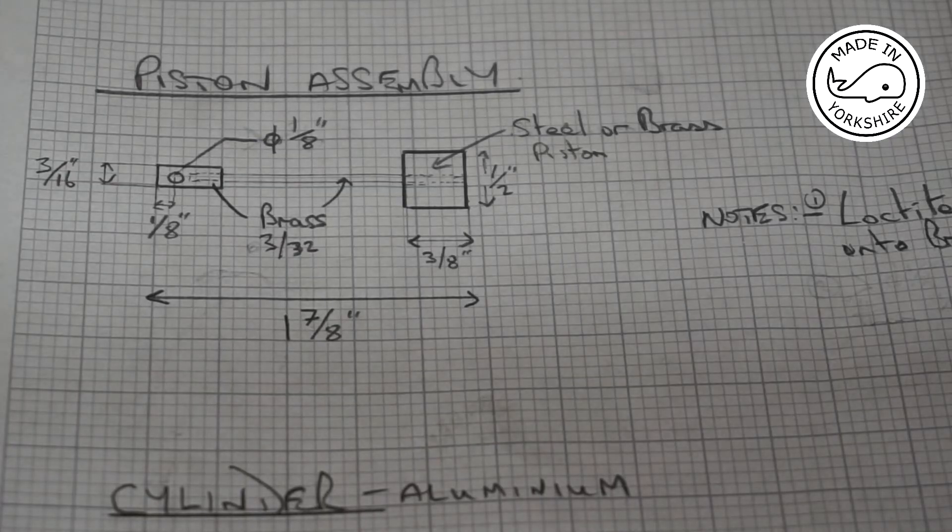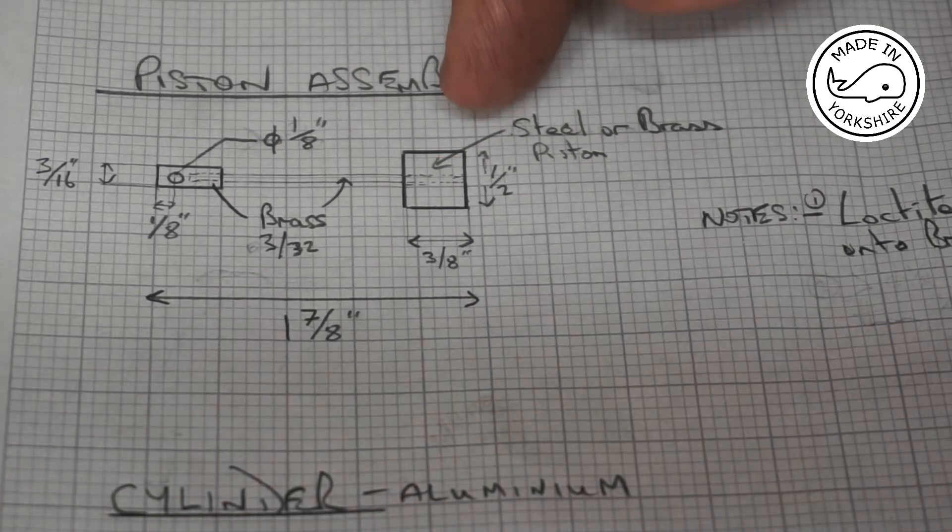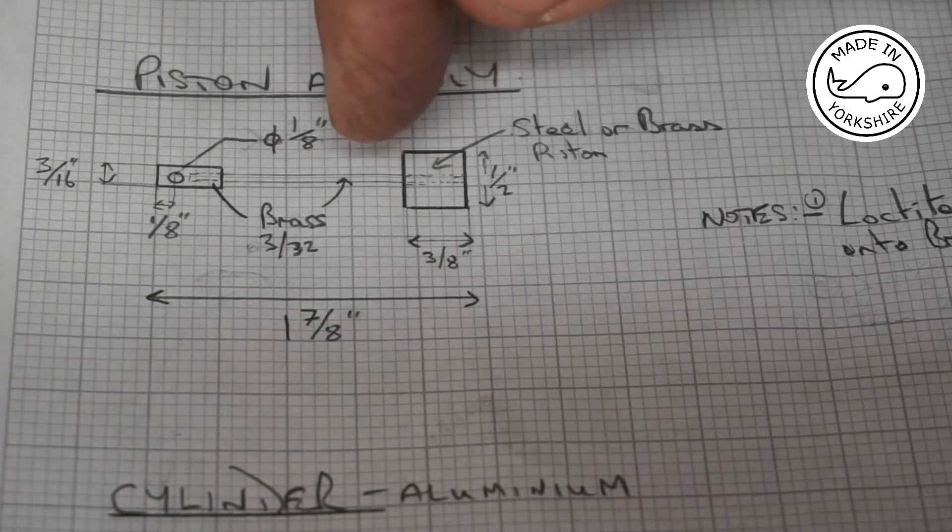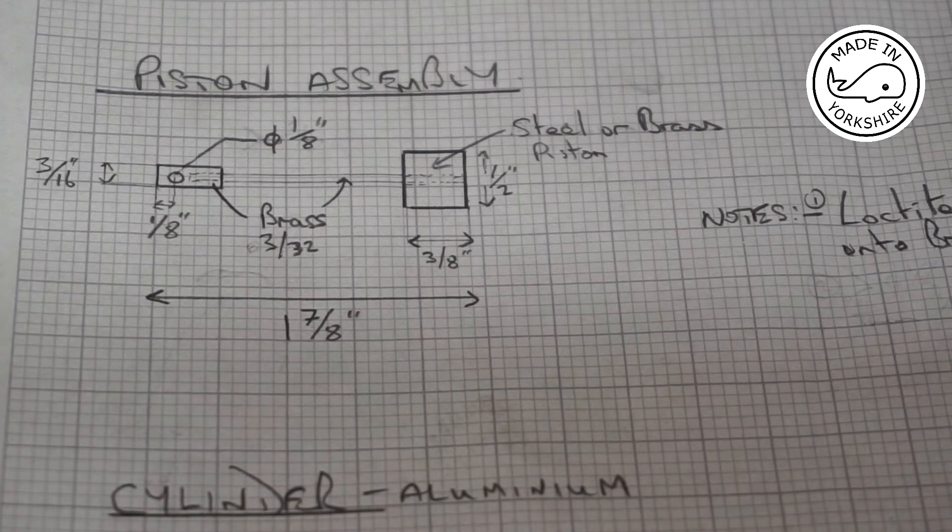Today I'm going to make this piston assembly. The actual piston is half an inch in diameter and three-eighths of an inch wide with a hole running through the center which is three thirty-seconds of an inch.